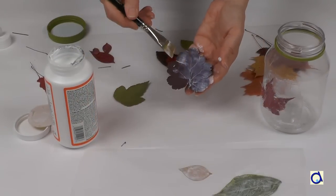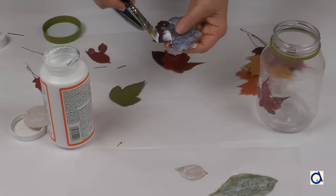Also put mod podge on the back of several leaves of trees, shrubs, and other plants that you have dried.